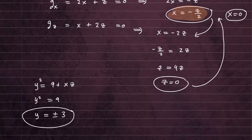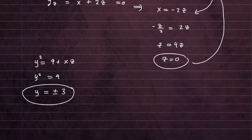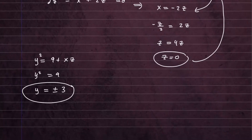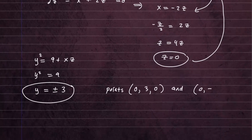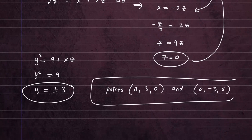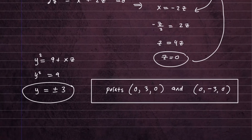So those are our candidate points on the surface closest to the origin. We need to verify this though. Our two points are (0, 3, 0) and (0, negative 3, 0). These are the points we claim are closest to the origin, and they lie on the surface.